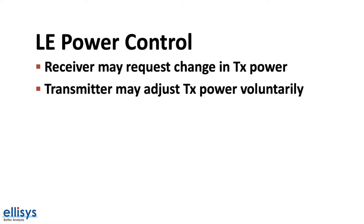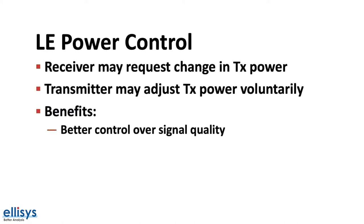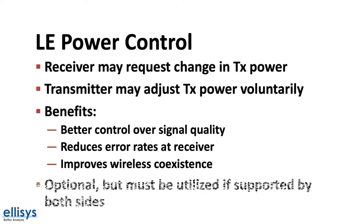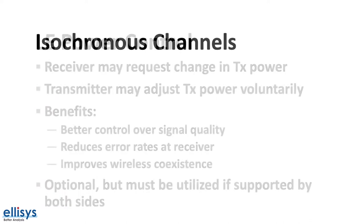Utilizing LE power control and keeping the RSSI within the optimal range of the receiver provides a few benefits. Some of those benefits include better control over the quality of the signal, reducing error rates at the receiving end, and improving coexistence with other signals in the 2.4 GHz band, including ones other than Bluetooth such as Wi-Fi and ZigBee. Support for this feature is optional, but if the two devices support the feature, then they must use it for power management control.